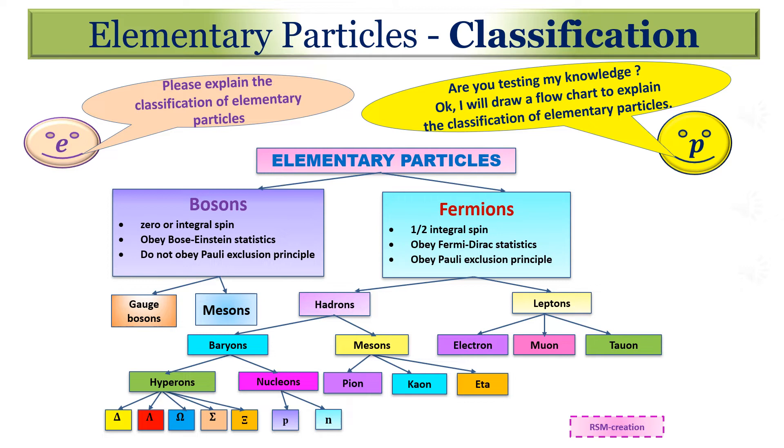Fermions are further classified into leptons and hadrons based on their interaction. Leptons are the particles which involve in weak interaction but hadrons are the particles which involve in strong interaction. Examples for leptons are electrons, muons, twins and neutrinos.